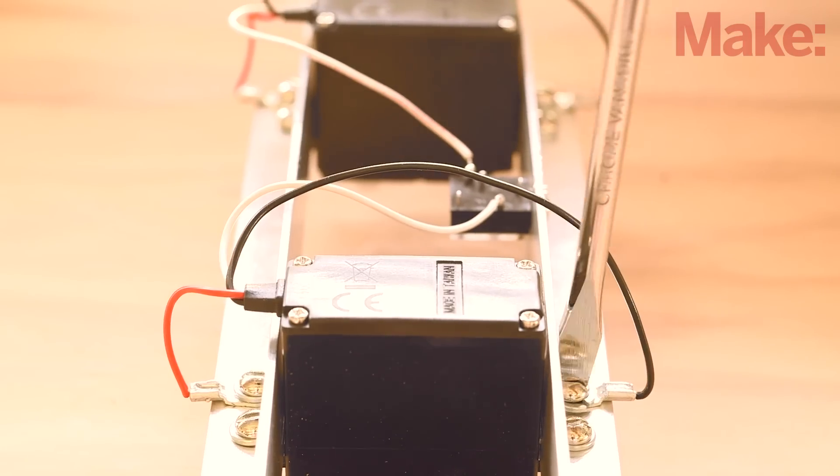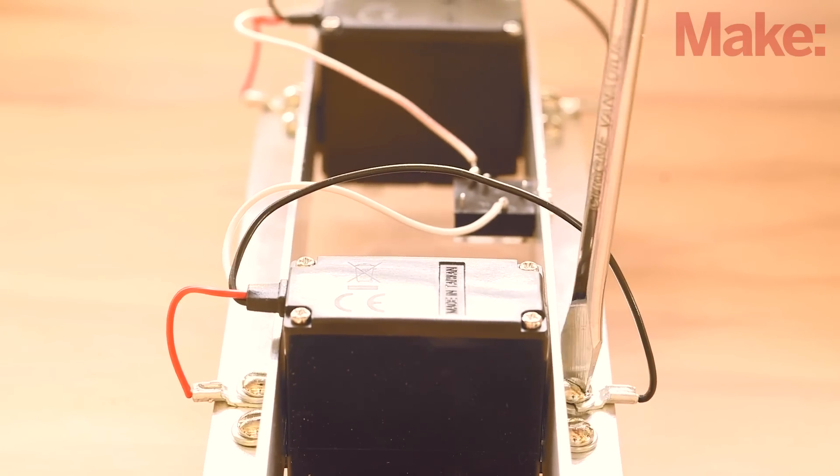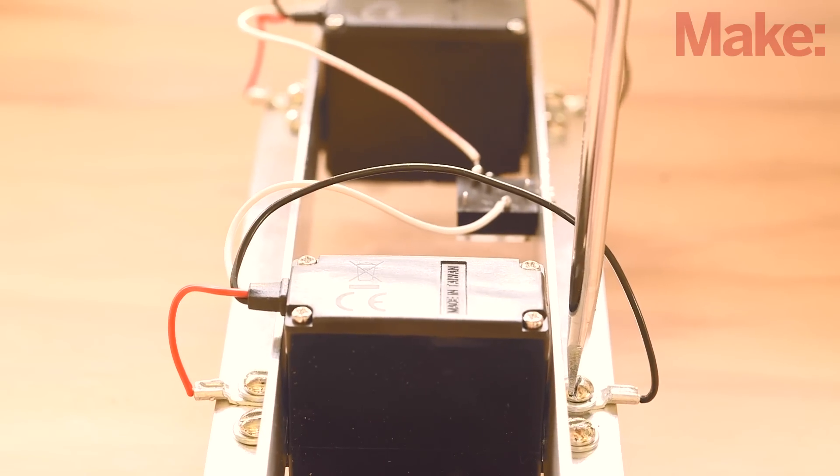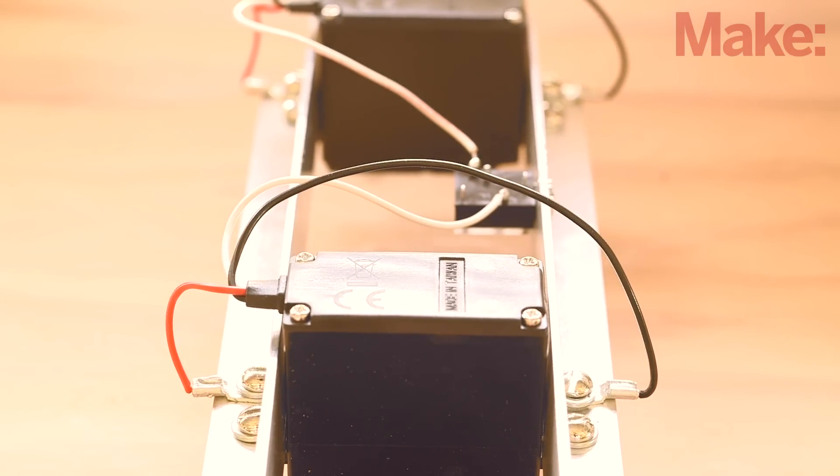Cut and strip the black and red leads from each servo. Crimp and solder lugs to the leads and then secure them to the power and ground rails with the servo mounting screws.